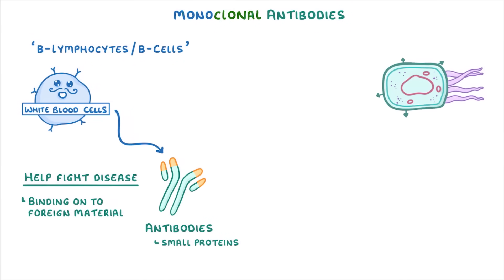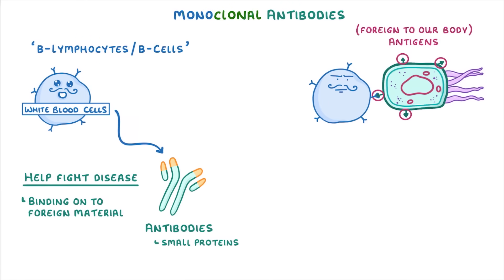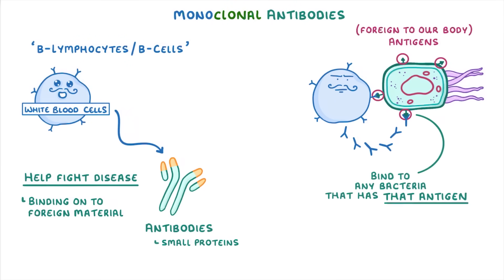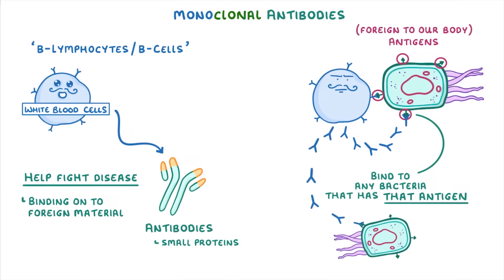For example, on this bacteria, these molecules in the cell wall could be considered antigens, because they're small molecules that are foreign to our body. So when B cells detect these antigens, they will produce loads of antibodies, which we can show as these little Y shapes. And as they spread out, they can bind to any bacteria that have that particular antigen, so if there was another bacteria of the same type which had the same antigens, the antibodies would be able to bind onto that bacteria as well.